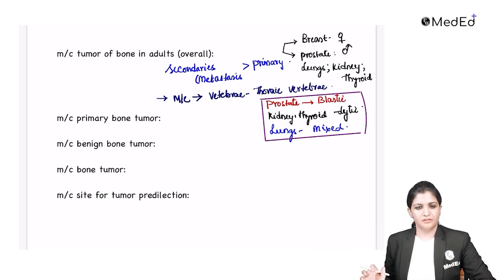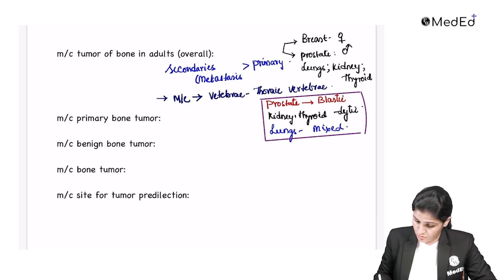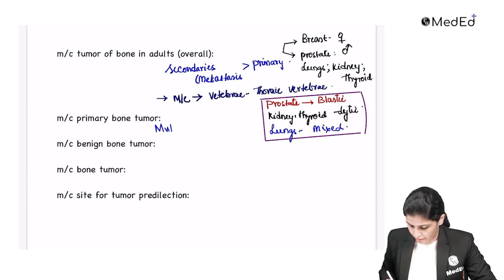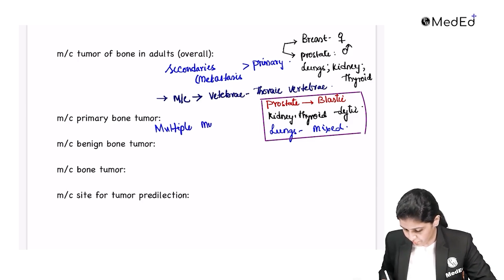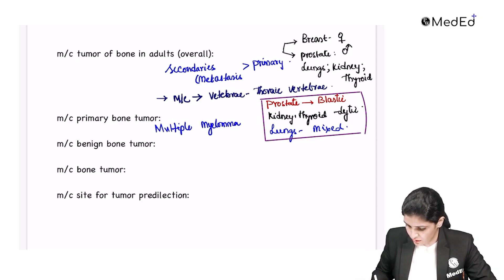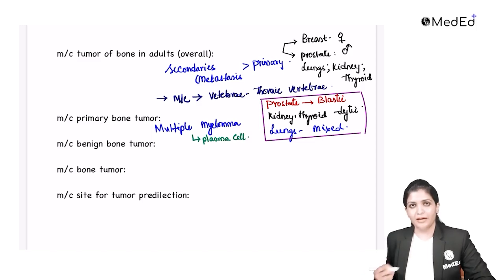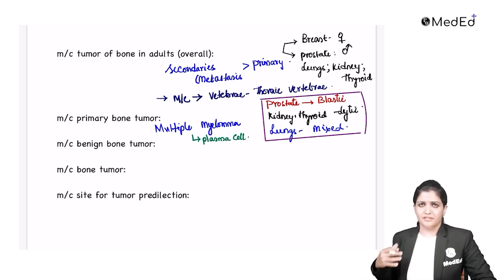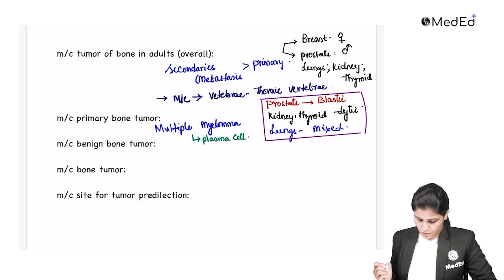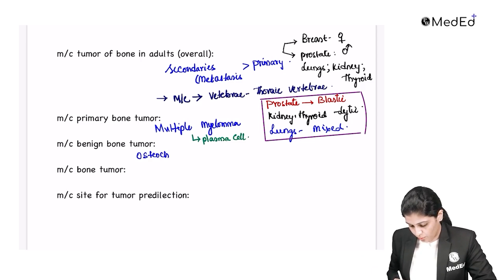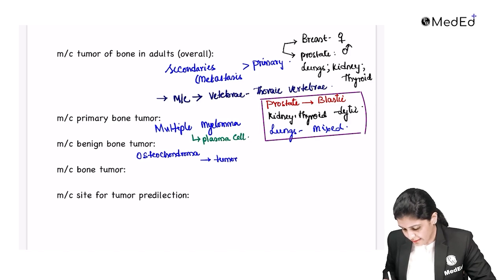Coming to the most common primary bone tumor: when I say primary bone tumor, it is multiple myeloma. Its origin is not from the bone itself but from the plasma cell — it is also called plasmacytoma, a hematopoietic cell tumor. So plasma cell, that is multiple myeloma, is the most common primary bone tumor. The most common benign bone tumor is osteochondroma.